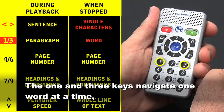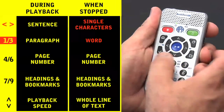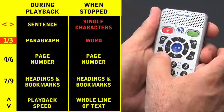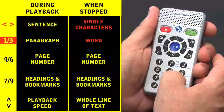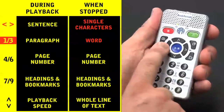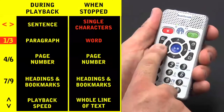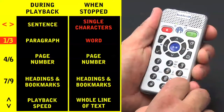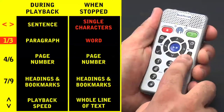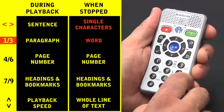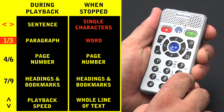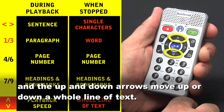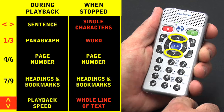The 1 and 3 keys navigate one word at a time — the device reads individual words: The, Steps, Viewing. And the up and down arrows move up or down a whole line of text.